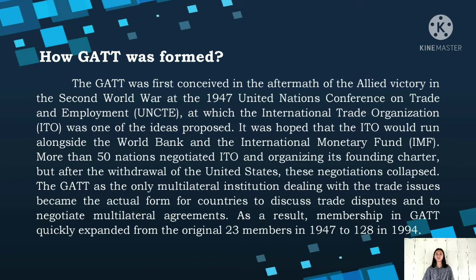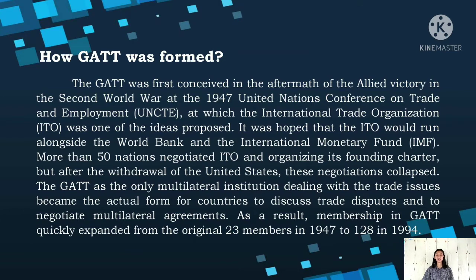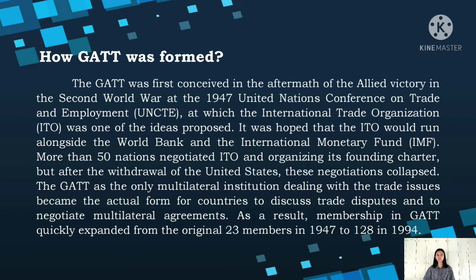The GATT was first conceived in the aftermath of the Allied victory in the Second World War at the 1947 United Nations Conference on Trade and Employment, at which the International Trade Organization or ITO was one of the ideas proposed. It was hoped that the ITO would run alongside the World Bank and the International Monetary Fund. More than 50 nations negotiated the ITO and its founding charter, but after the withdrawal of the United States, these negotiations collapsed. GATT, as the only multilateral institution dealing with trade issues, became the actual forum for countries to discuss trade disputes and negotiate multilateral agreements. As a result, membership in GATT quickly expanded from the original 23 countries in 1947 to 128 in 1994.